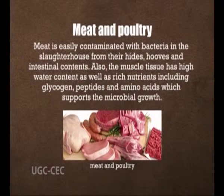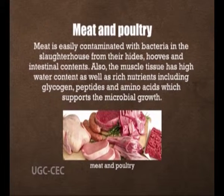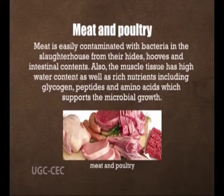Meat is easily contaminated with bacteria in the slaughterhouse from their hides, hooves and intestinal content. The muscle tissue of meat has high water content as well as rich nutrients including glycogen, peptides and amino acids, which supports microbial growth. The breakdown of peptides and amino acids produces undesirable odorants, which are an indication of spoilage. Meat lipids are commonly spoiled abiotically by auto-oxidation of unsaturated fatty acids, independent of microbial activity.